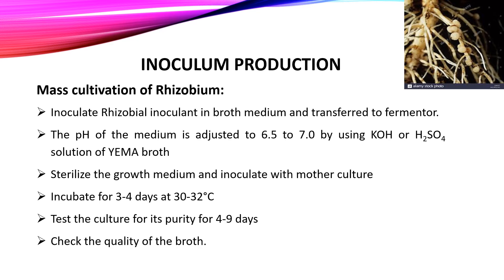For mass cultivation of Rhizobium, the rhizobial inoculant is inoculated in broth medium and transferred to a fermenter. The pH of the medium is adjusted to 6.5 to 7 using potassium hydroxide or sulfuric acid in YEMA broth. The growth medium is sterilized, inoculated with mother culture, and incubated for 3 to 4 days at 30 to 32°C. The test culture is then checked for purity for 4 to 9 days, and the quality of the broth is also checked.